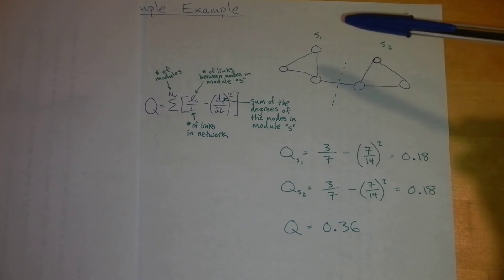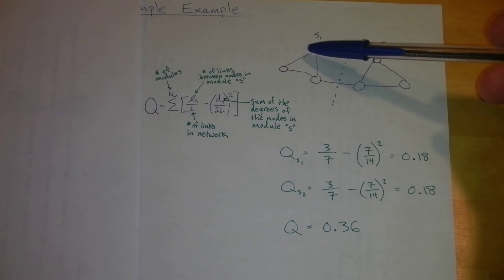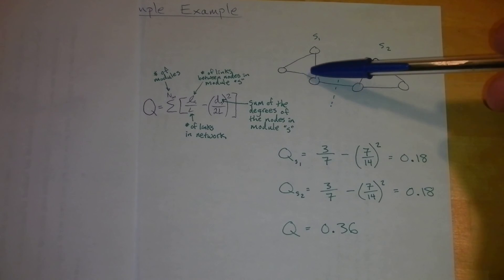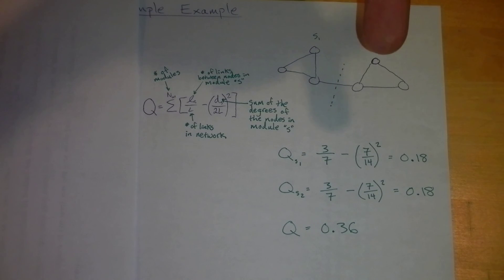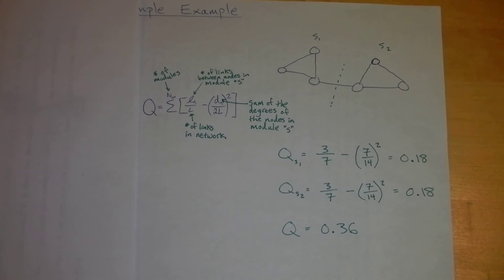Minus the sum of the degrees of the nodes in the network: 1, 2, 3, 4, 5, 6, 7, divided by 2 times the number of links in the network. We get a value of 0.18. Module 2, you'll notice the structure is exactly the same, so we get the same value. We end up having a modularity value of 0.36.